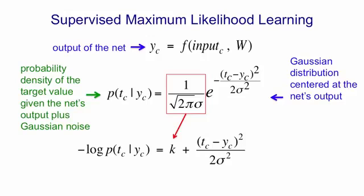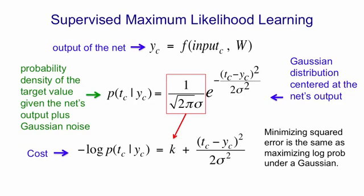And so what you see is that if our cost function is the negative log probability of getting the right answer, that turns into minimizing a squared distance. It's helpful to know that whenever you see a squared error being minimized, you can make a probabilistic interpretation of what's going on. And in that probabilistic interpretation, you'll be maximizing the log probability under a Gaussian.